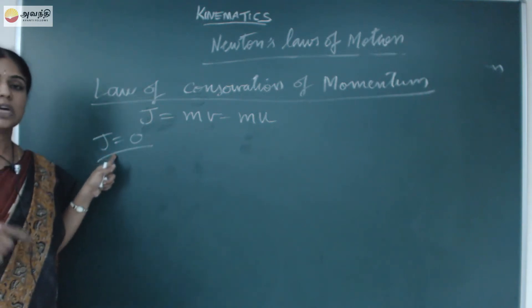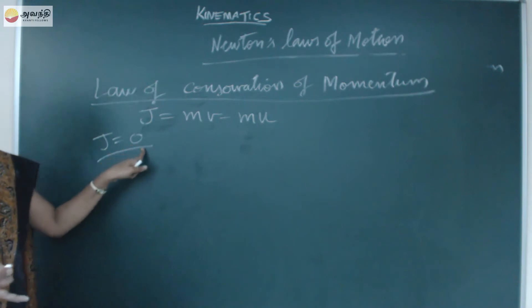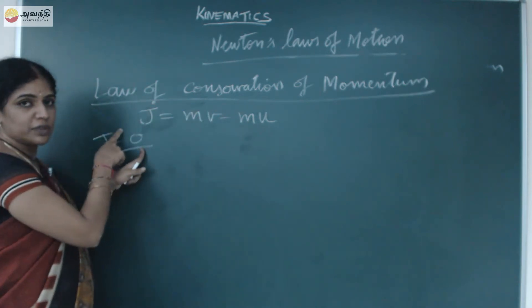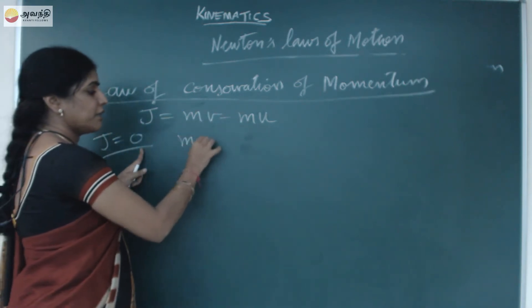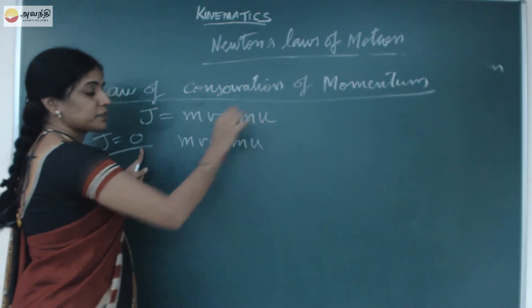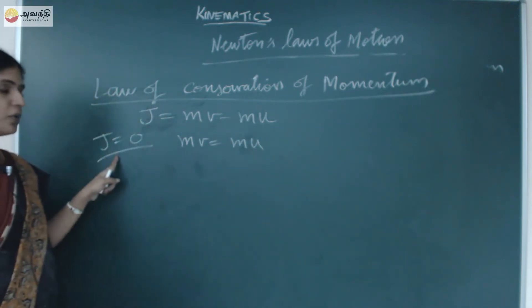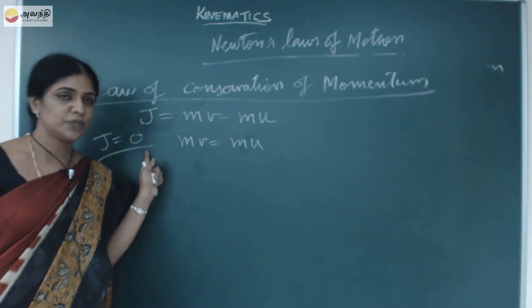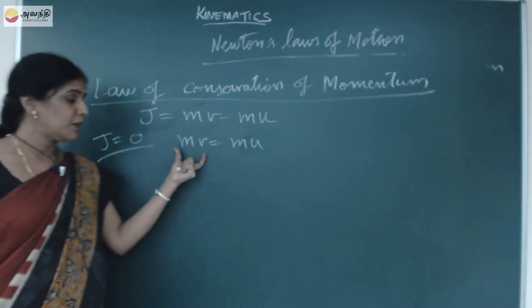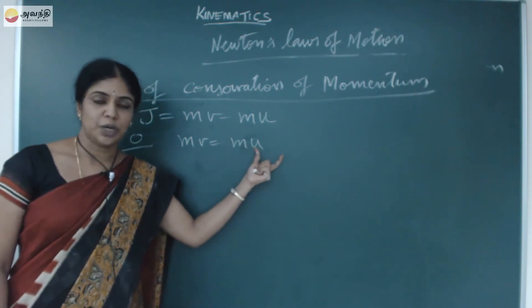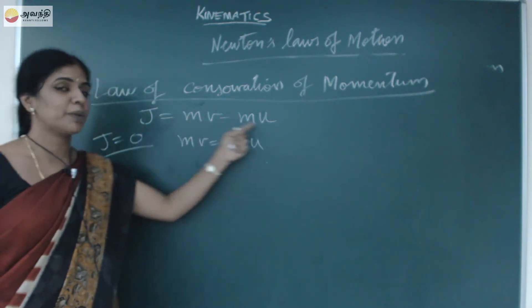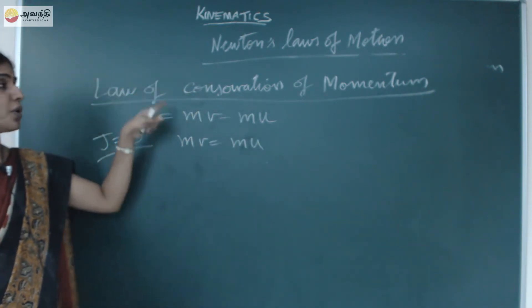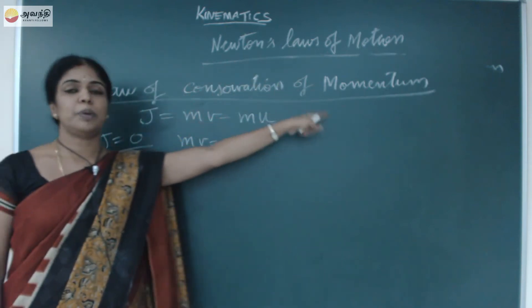What happens when there is no impulsive force or no force acting on it? J will become zero. I can write this mv equals mu. That is, when no force or no impulsive force acts on an object, I can say final momentum equals initial momentum. The total momentum remains to be the same in a system. That we call the law of conservation of momentum.